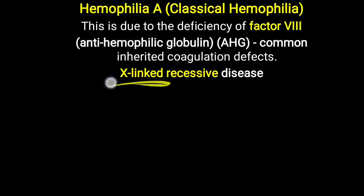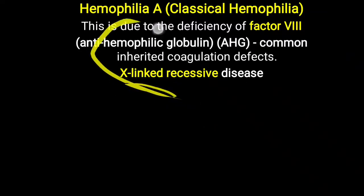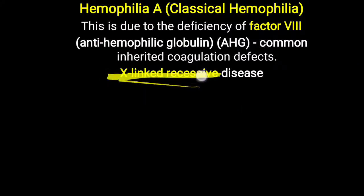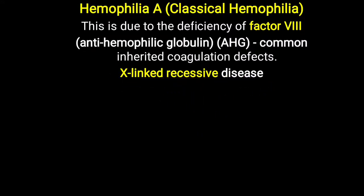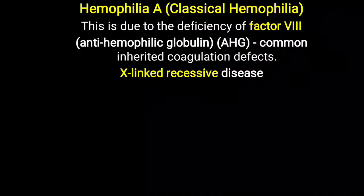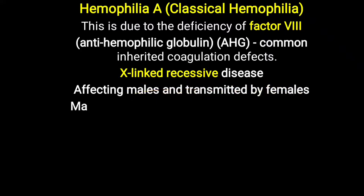Regarding the pattern of inheritance: in males, there is one X and one Y chromosome, so the recessive condition manifests, meaning males are mostly affected by Haemophilia A. In females, there are two X chromosomes, so if only one is affected and the second is normal, the disease is not manifested. The disease manifests in females only if both X chromosomes are affected. So mostly males are affected, and females are carriers who transmit the disease.